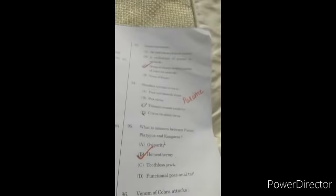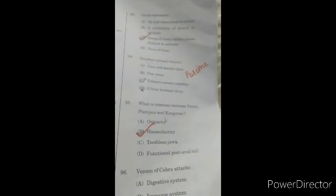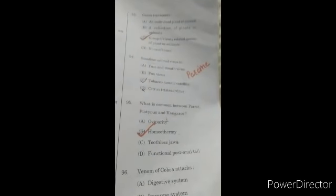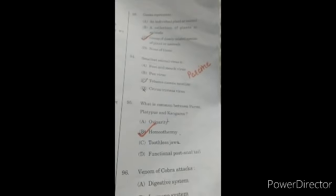Question 93: genus represents C option, group of closely related species of plants or animals.